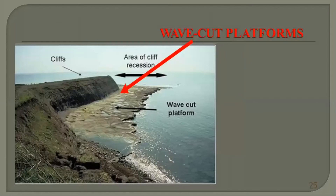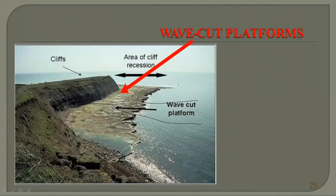Here is a wave-cut platform. You can see the flat area that was once part of this cliff and has been eroded by wave action. The waves are strong here and they cut down the platform's elevation, eroding the sediments. There is no sandy beach here. This is the area of recession of the cliff — the cliff is moving back, and over the next few hundred years this area will also be removed.